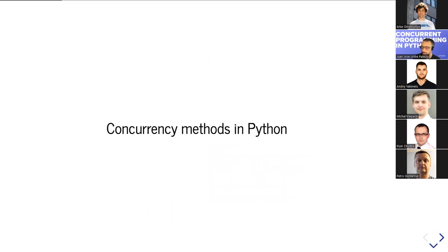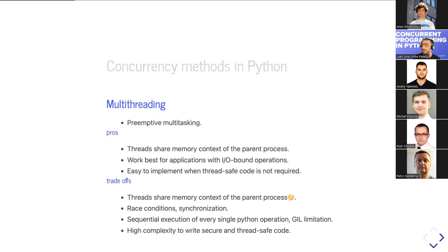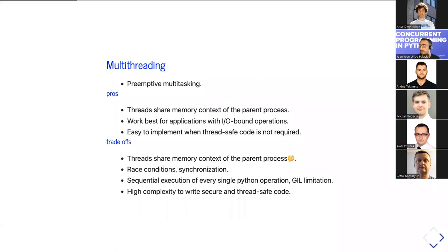Now that we understand why concurrency is needed, let's discuss the different methods available in Python. The first is multi-threading. Most of you know this term — it's transverse across languages. Multi-threading is preemptive multitasking, meaning the operating system handles context switching between threads. The OS can switch from one thread to another even when the program is not waiting for something.